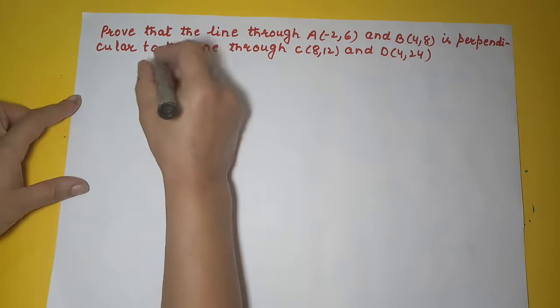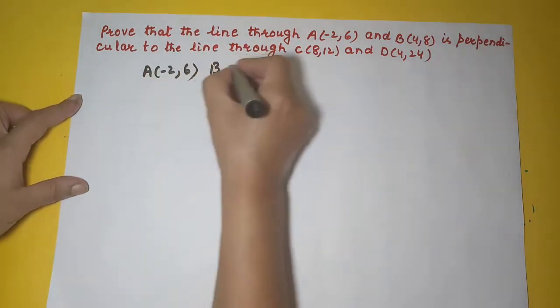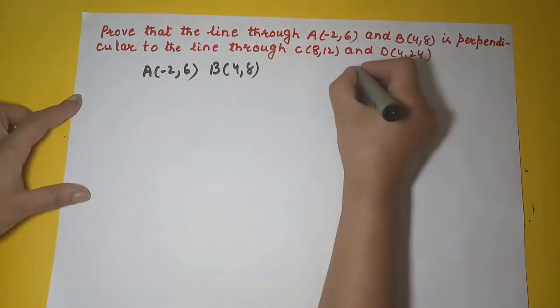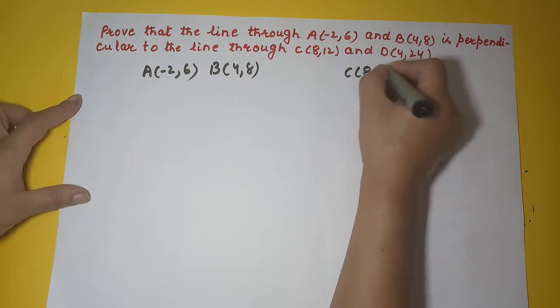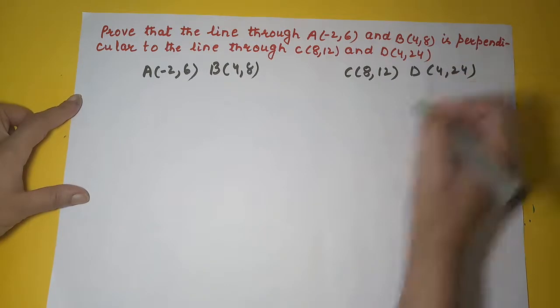So we have point A as minus 2 and 6, then we have point B as 4 and 8. Similarly here we have C as 8 and 12, and D as 4 and 24.